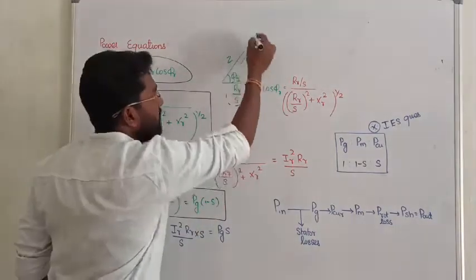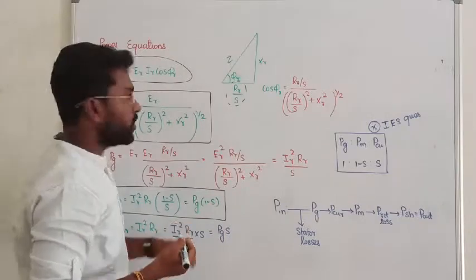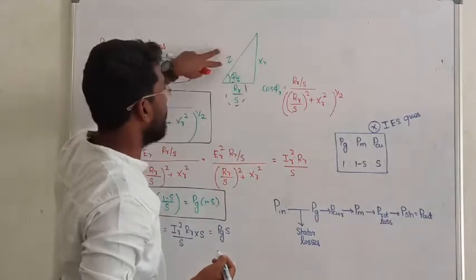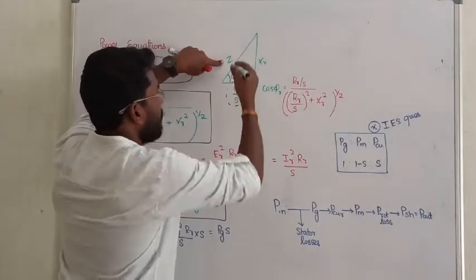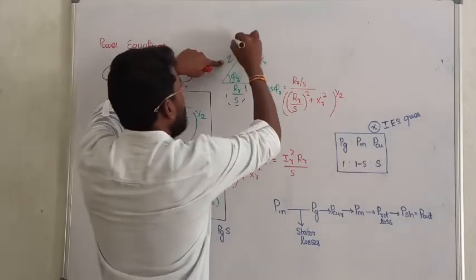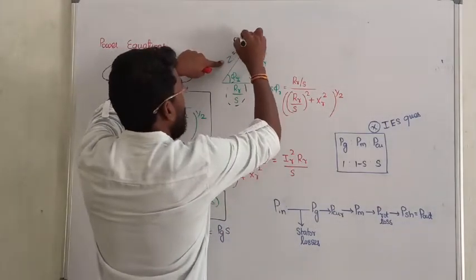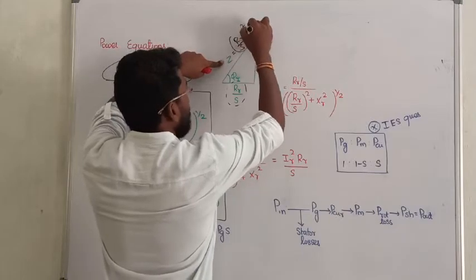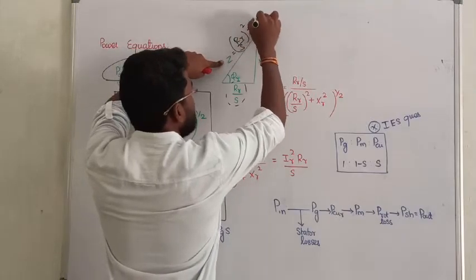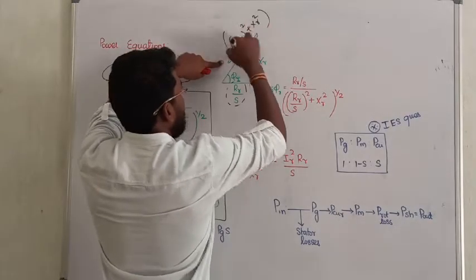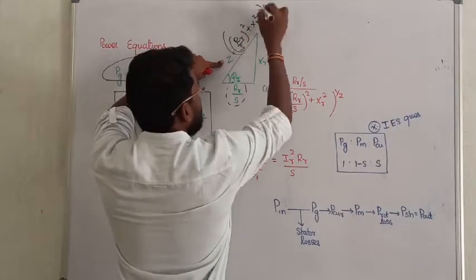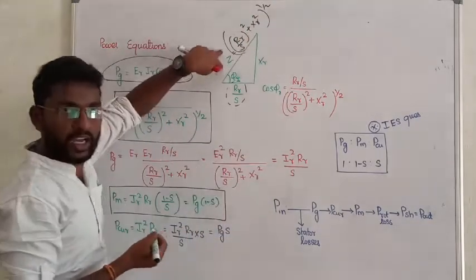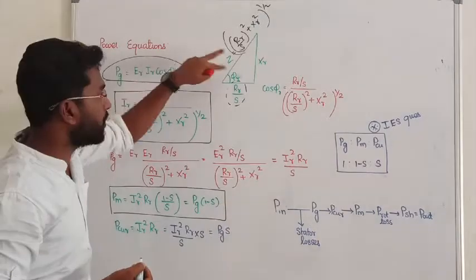From this impedance diagram, the impedance angle covers everything. Z of the rotor is defined by the law: Z equals the square root of (R_R by S) whole square plus X_R square. That is how we find the magnitude of impedance from the Pythagoras theorem.